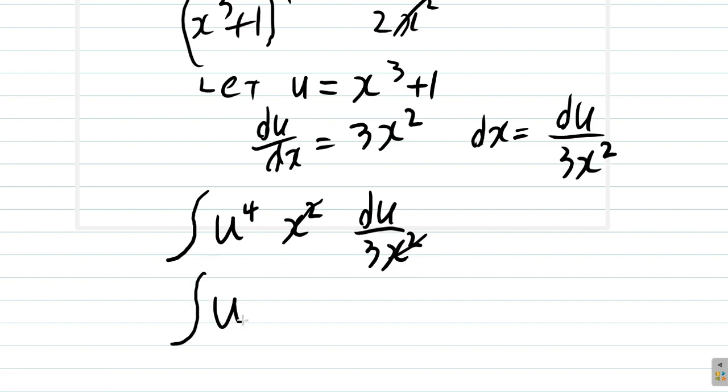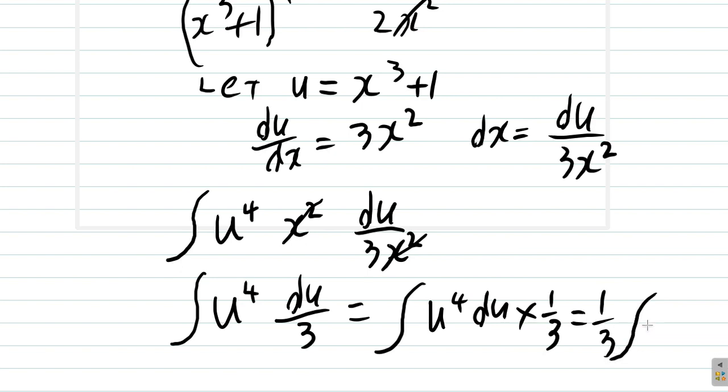So what you have is the integral of u to the 4th du over 3. Same thing as the integral of u to the 4th du times 1 third. We can write 1 third behind the integral sign. Now, the integral of u to the 4th du.